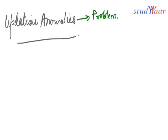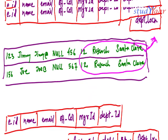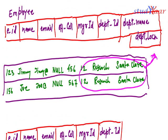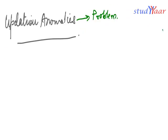Let's suppose in this above schema, my entire schema is comprised of only this one relation. I want to store information about a new department which is coming up, and as of now there is no one working in this department.